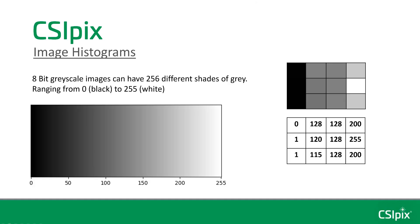Before I get into that, I need to explain what an image intensity histogram is, because that's what you see and use in the interface for manual levels. My explanation will use 8-bit grayscale images. 8-bit grayscale images can have 256 different shades of grey, ranging from 0, which is black, to 255, which is white.